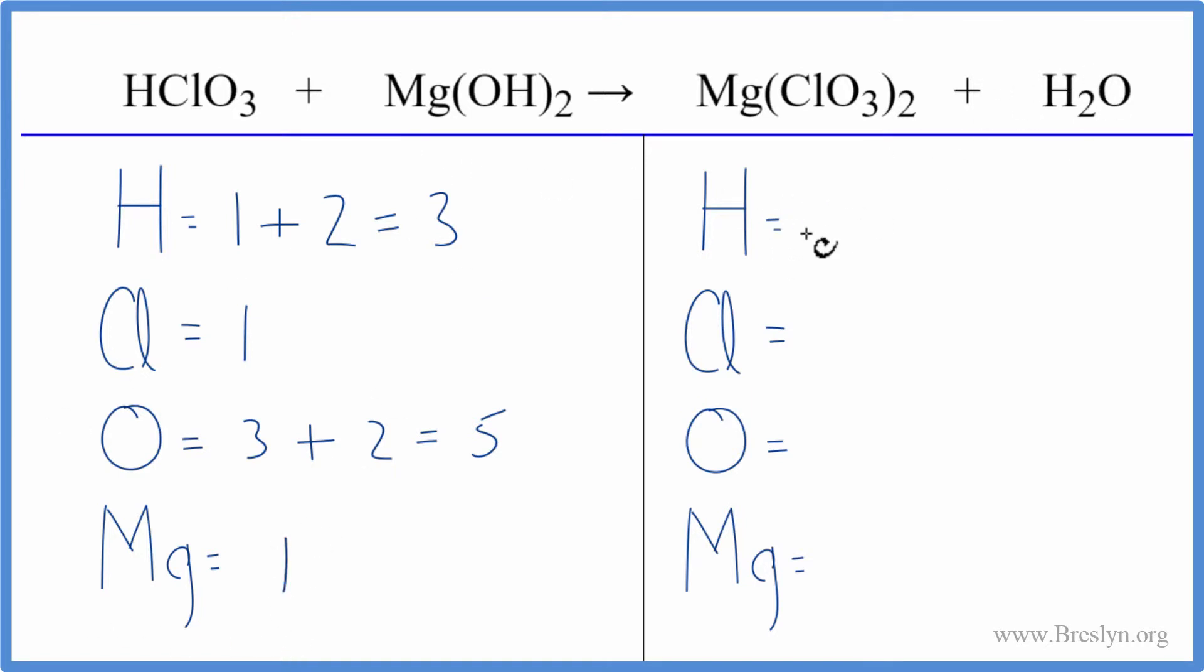On the product side, we have two hydrogens, two times the one chlorine, two times three, that's six oxygens, plus the one oxygen here in water, that gives us seven, and then one magnesium.